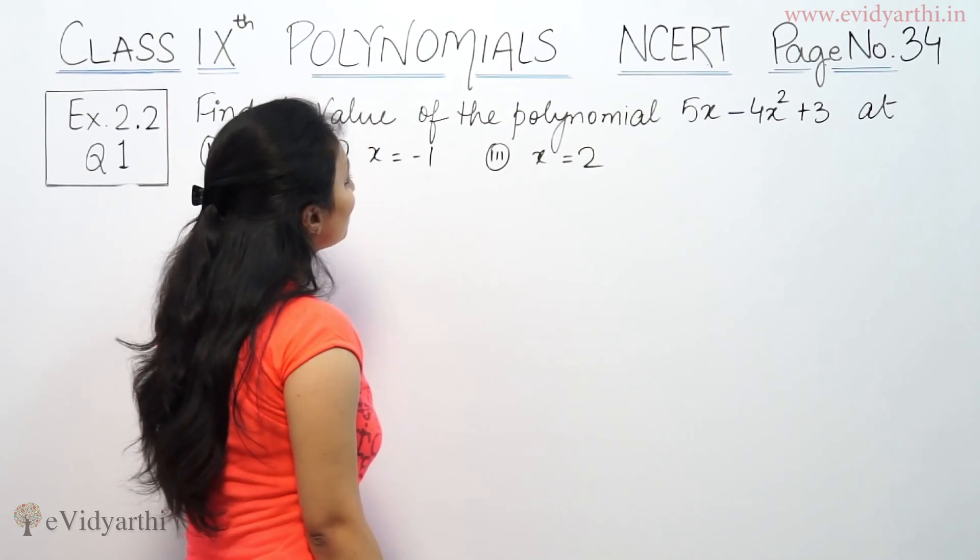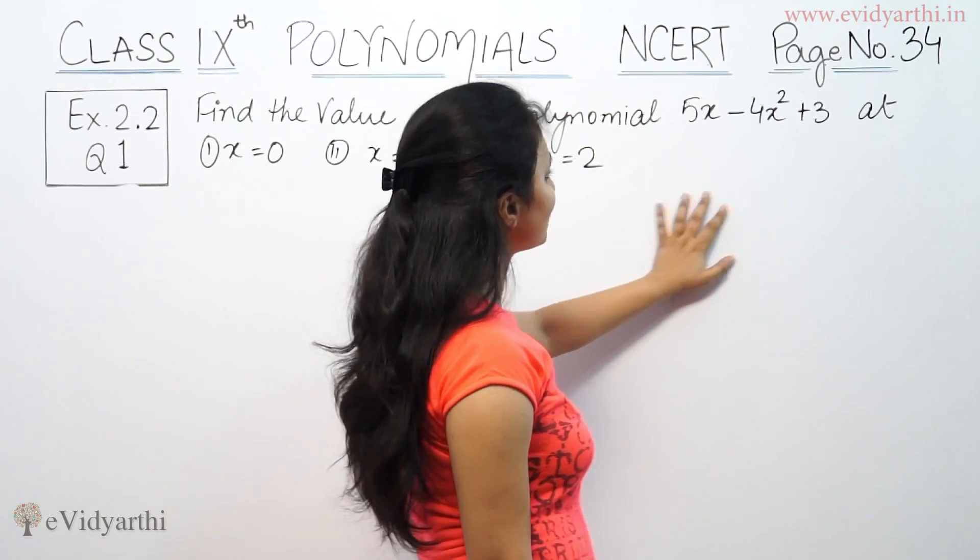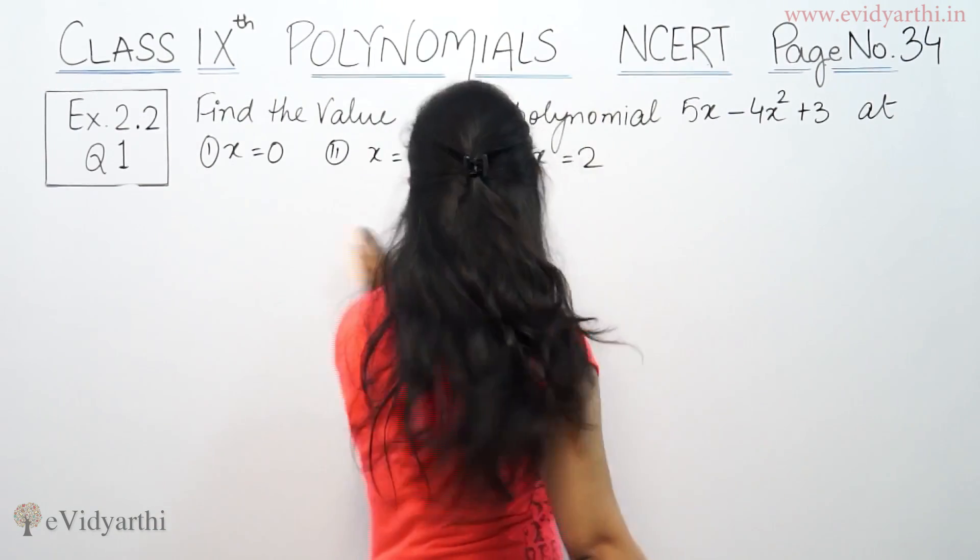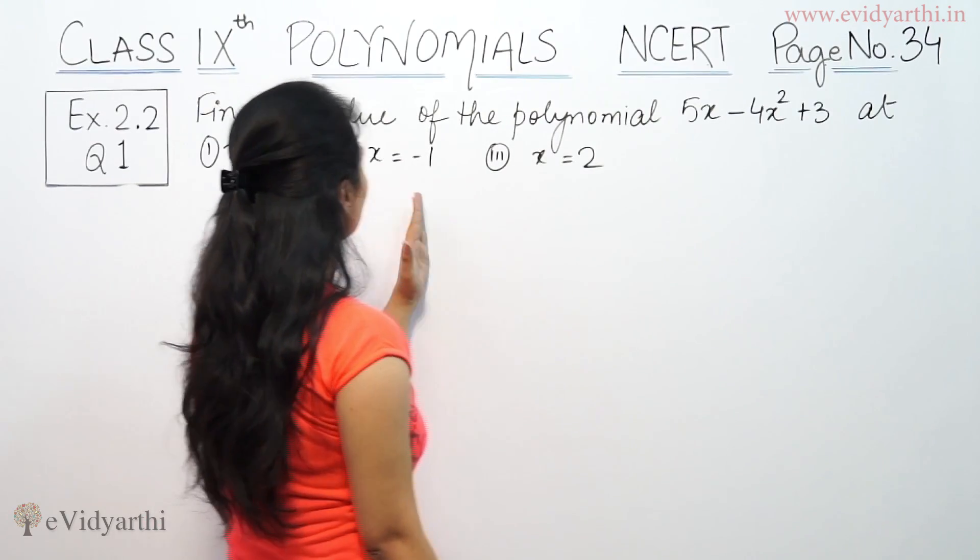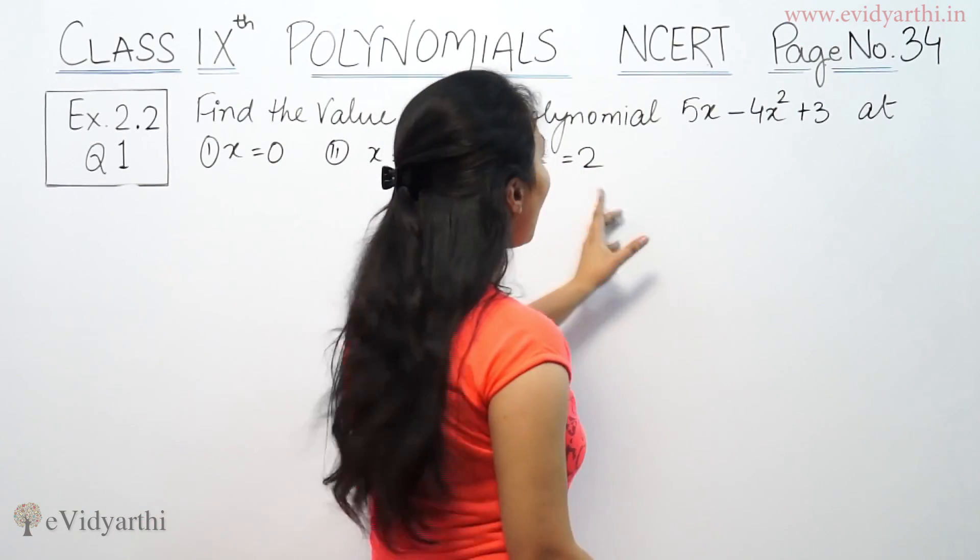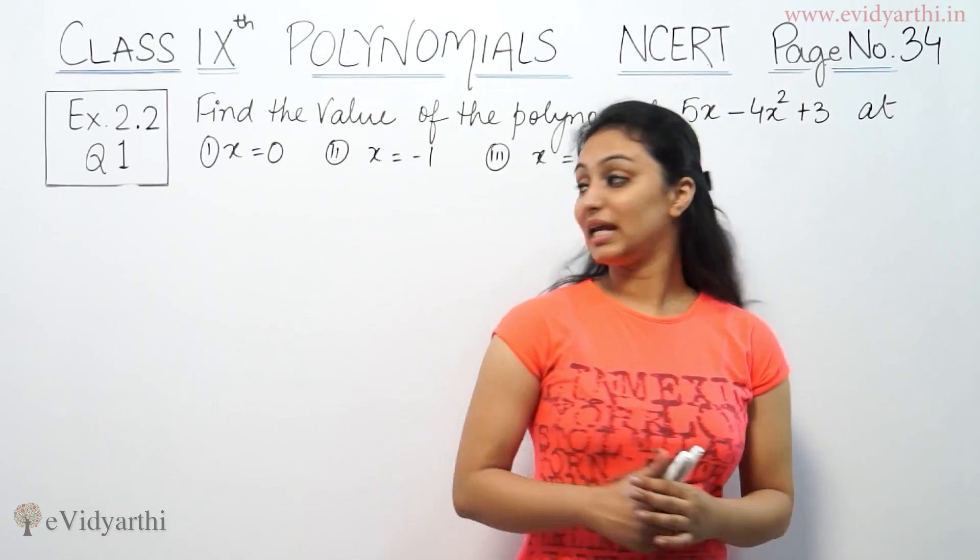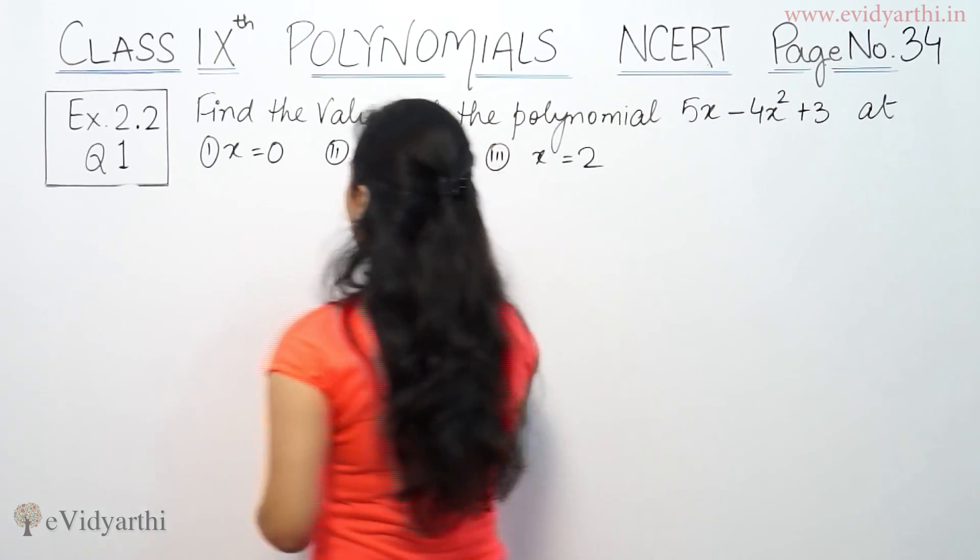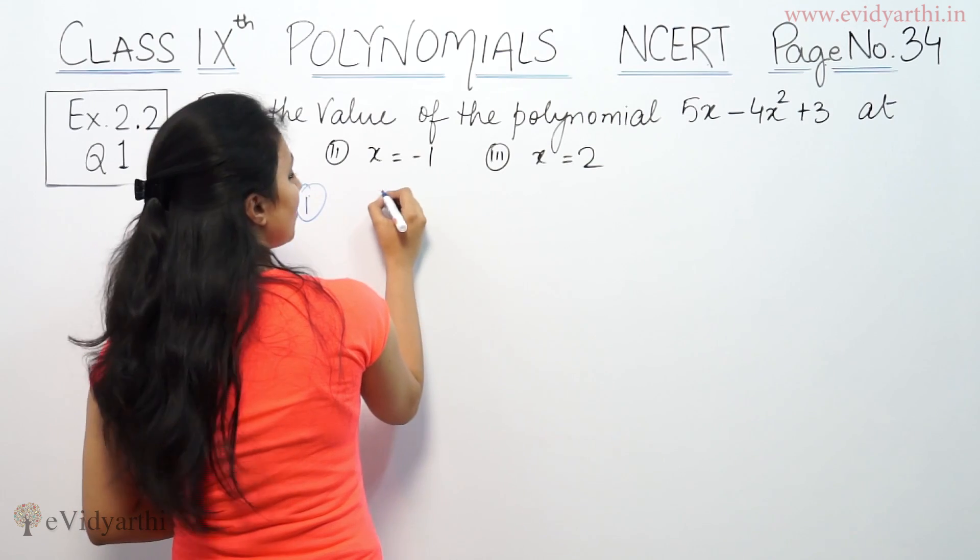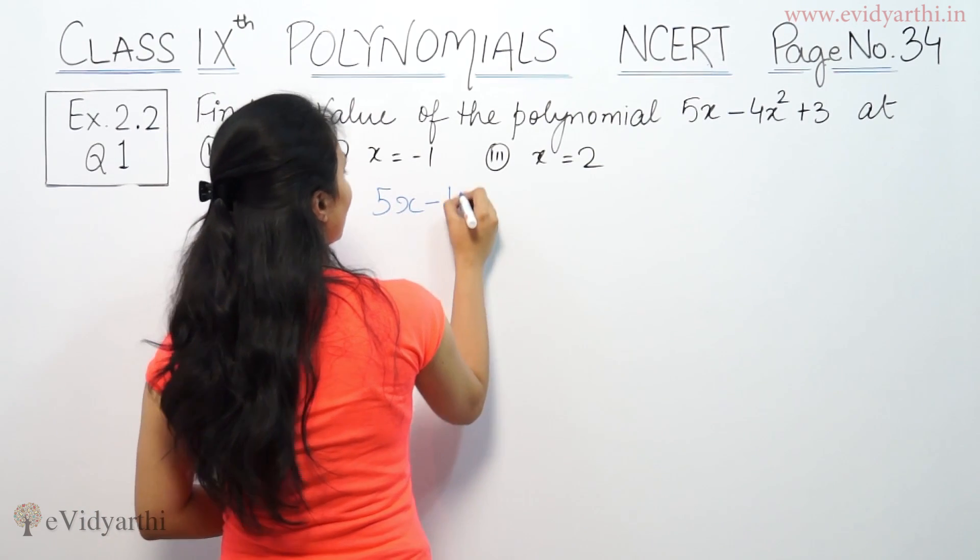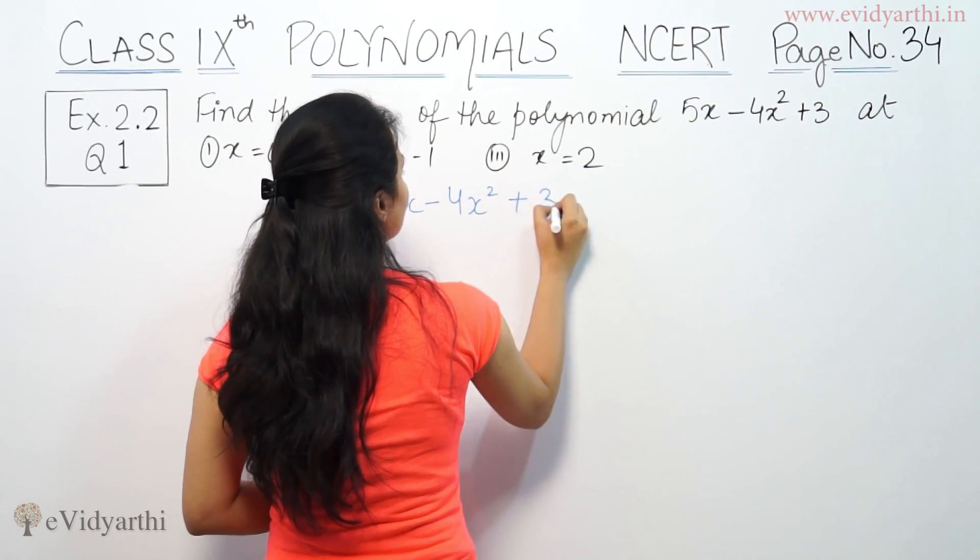The question says find the value of the polynomial 5x minus 4x squared plus 3 at x equals 0, x equals minus 1, and x equals 2.